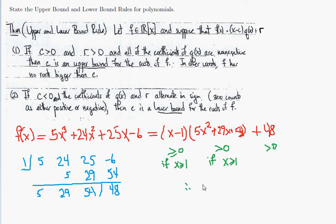Therefore, we know that f(x) must be greater than 0 if x ≥ 1. Because it's a non-negative number times a positive number plus another positive number, that is going to be positive.